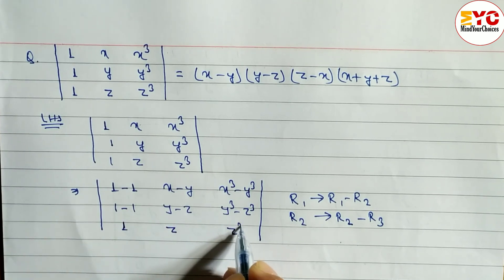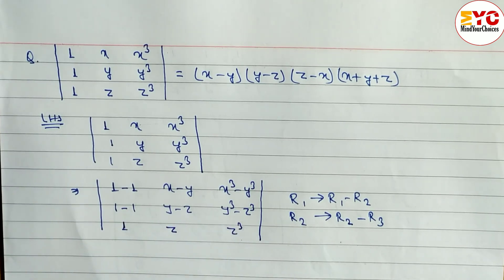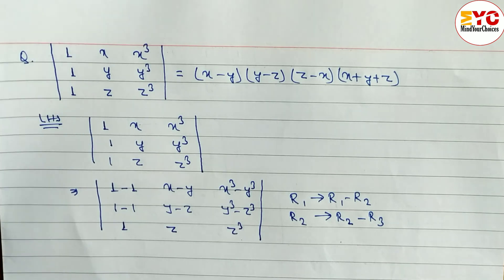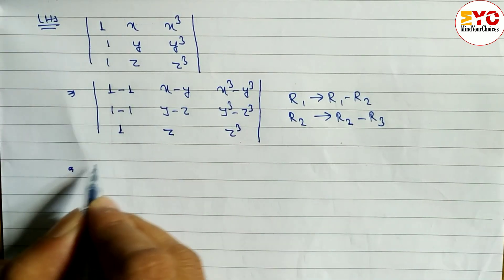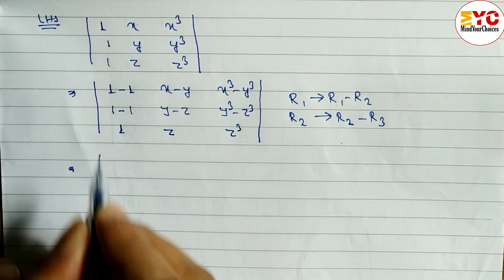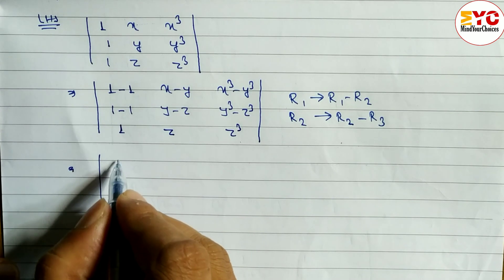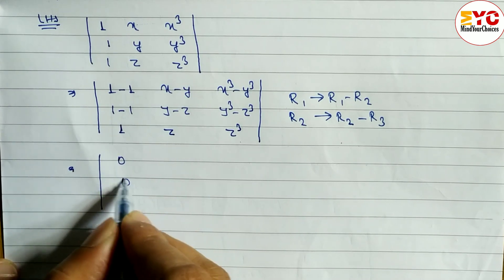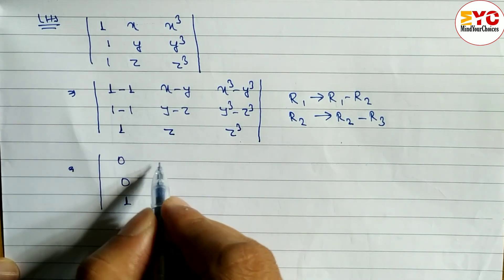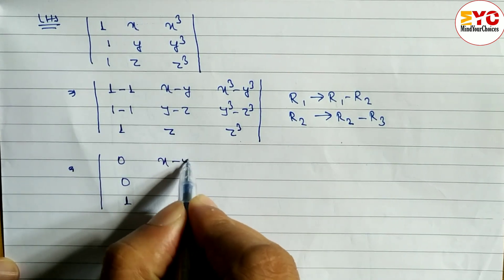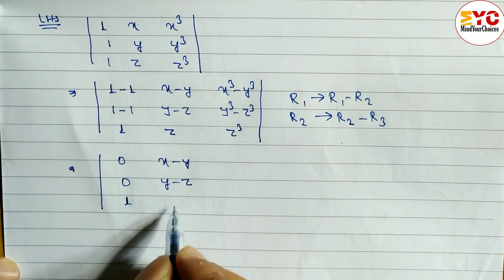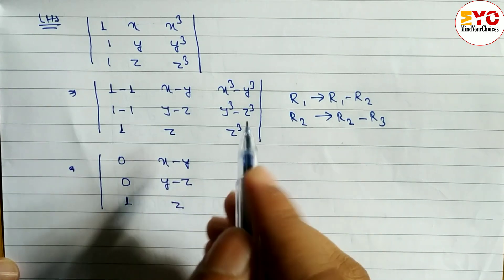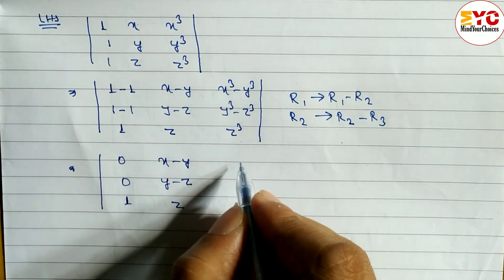The third row we write down the same: 1, z, z³. So after the row operations the matrix becomes: first row: 0, x minus y, x³ minus y³; second row: 0, y minus z, y³ minus z³; third row: 1, z, z³.